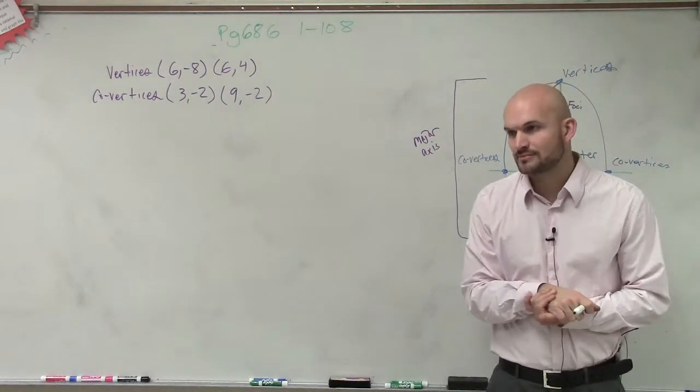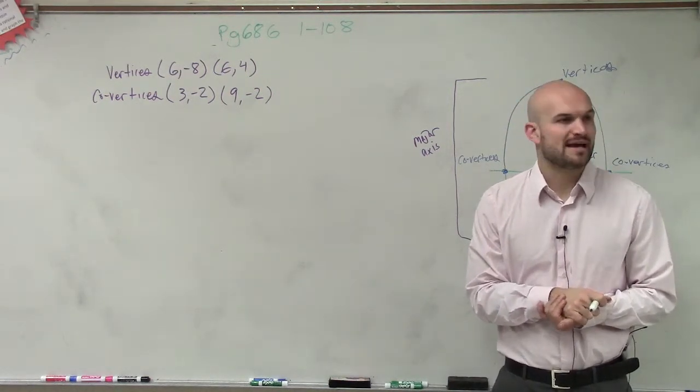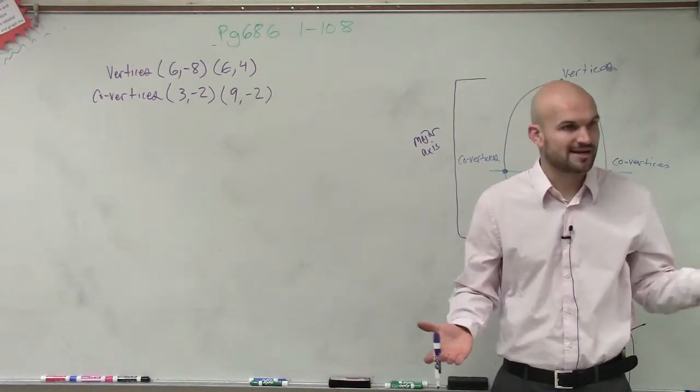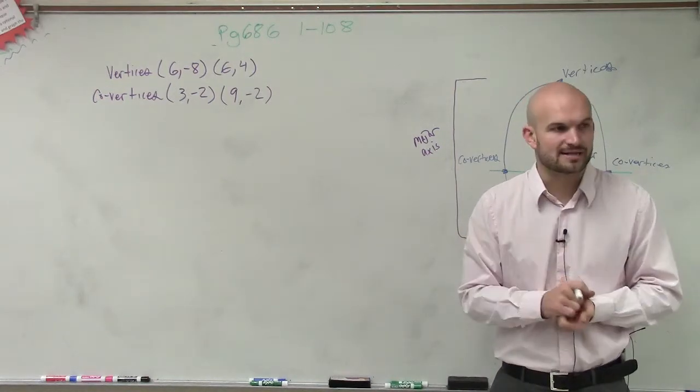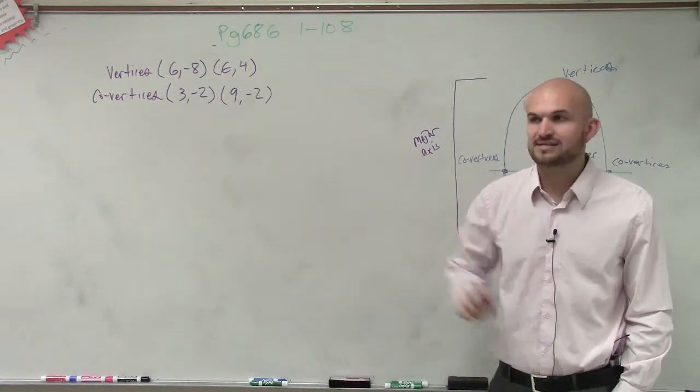Now there's a problem here. There's two equations that we have for an ellipse, right? One that has a major axis that's horizontal, and one that has a major axis that's vertical. There are two different equations. Well, they're kind of similar, but the a and the b are in different spots. So the first thing we need to do, we don't even know what formula we can use.